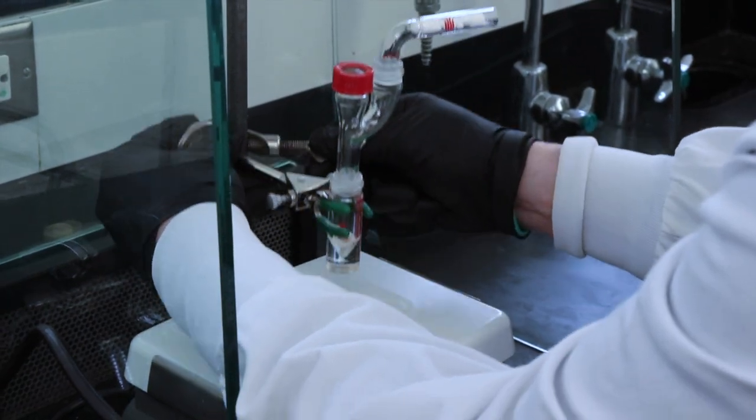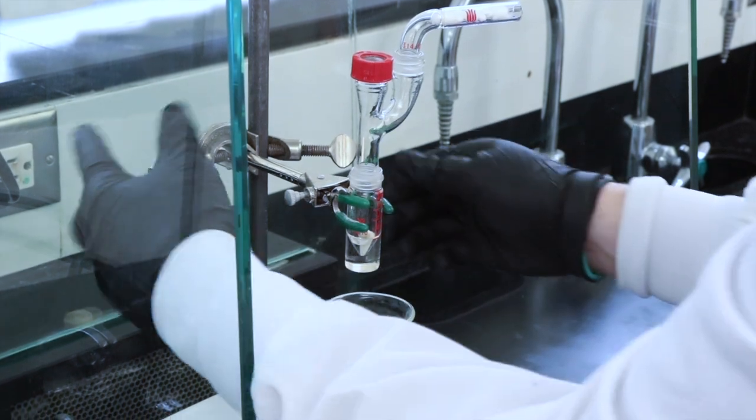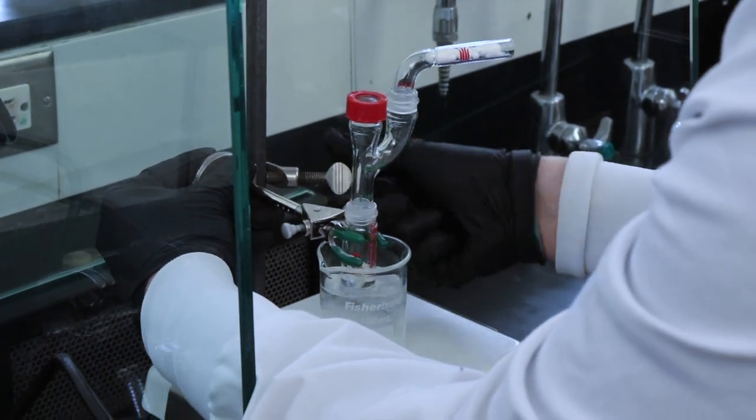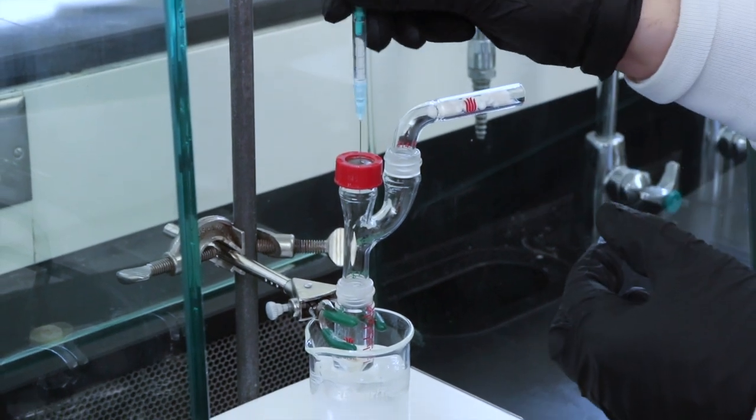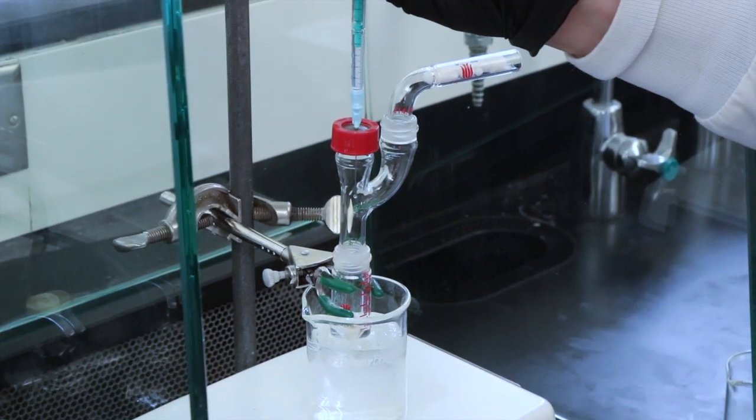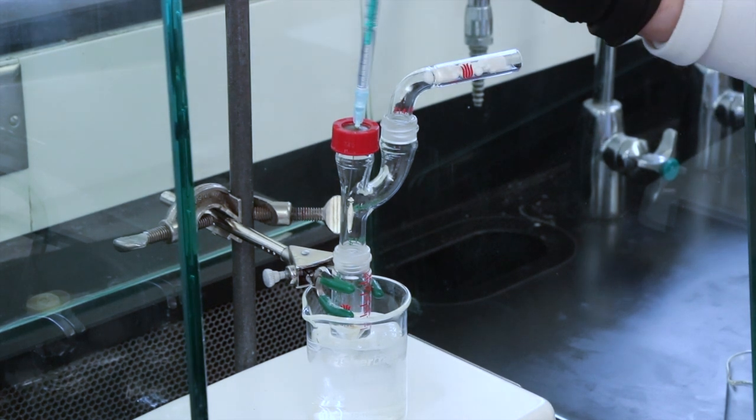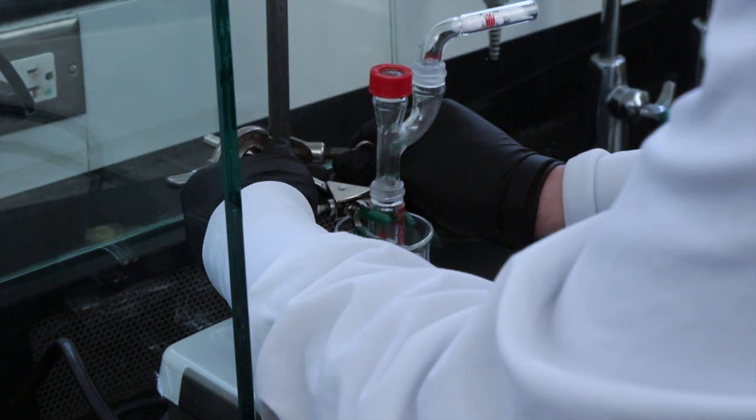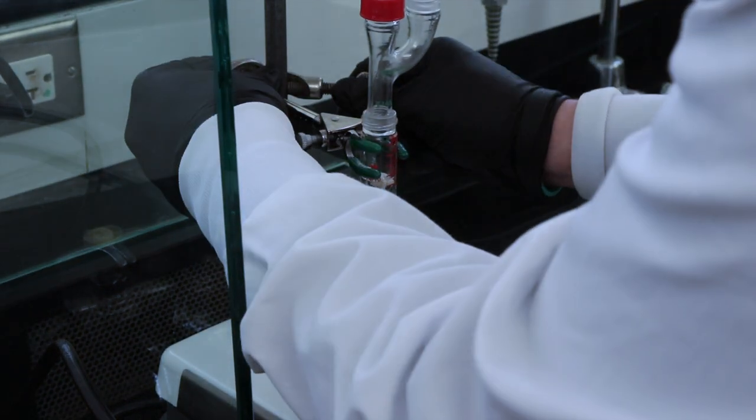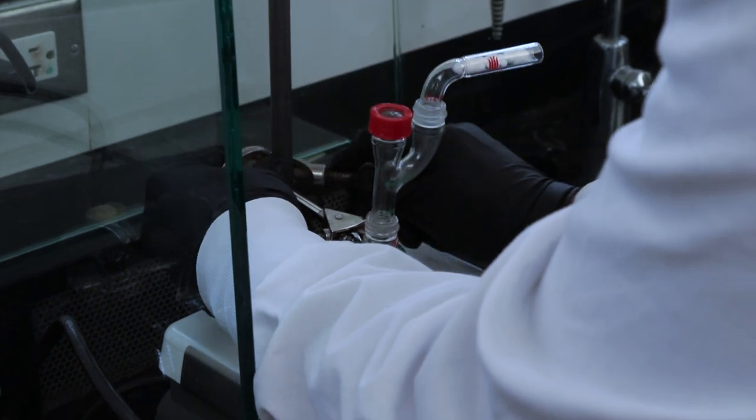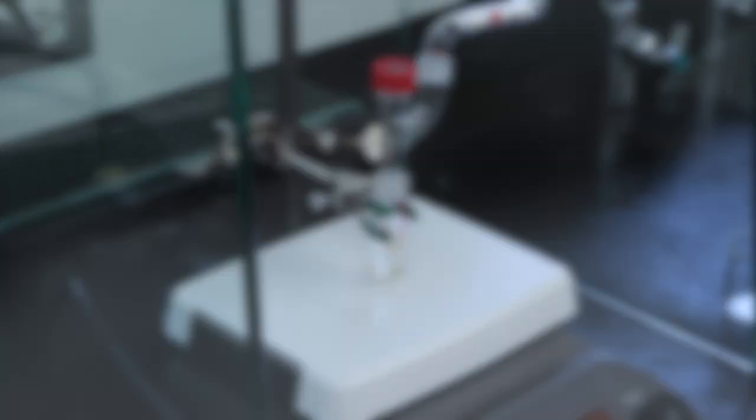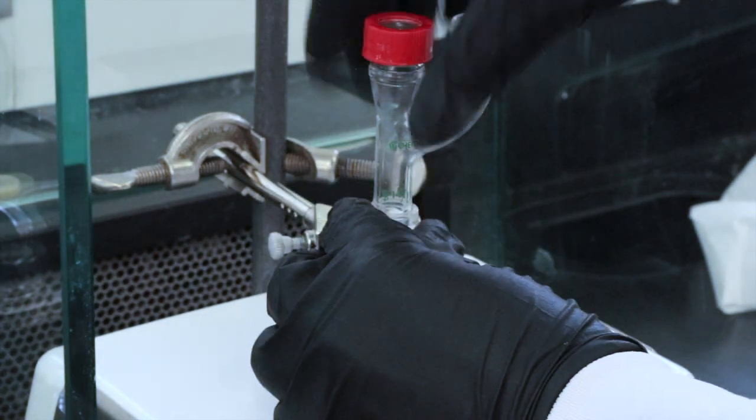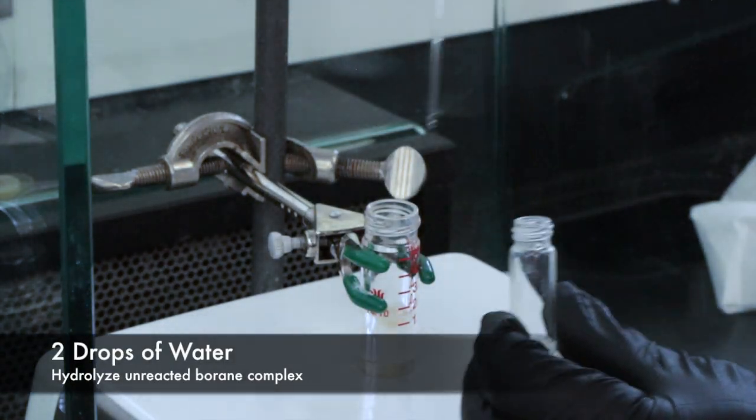Before adding the borane I'm going to be putting the conical vial into an ice bath. Because the borane complex is very reactive we want to control the rate of reaction as much as possible. And I'll also be adding the reagent dropwise over a period of five minutes just so that the energy released from this reaction doesn't cause runaway reactions that we don't want. Once everything has been added I can now take the conical vial out of the ice bath and let the reagents react together for about 45 minutes at room temperature. Once that is done I'll add two drops of water to hydrolyze any unreacted borane and stop the reaction.